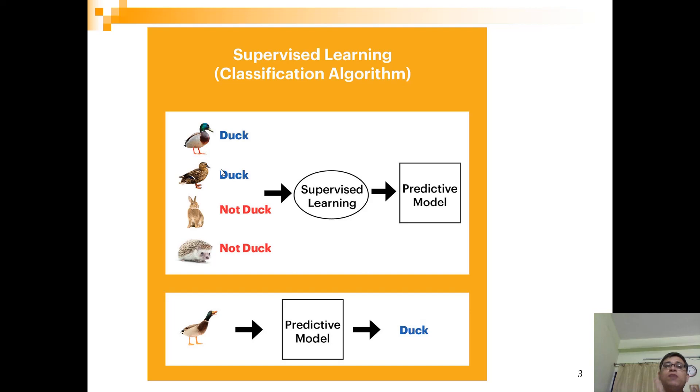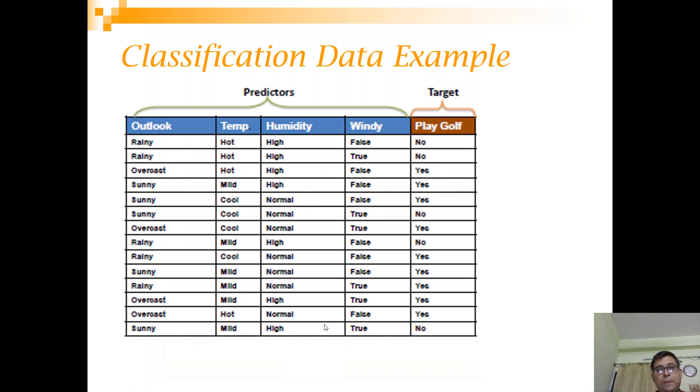One thing to be noted is that with each observation, it is labeled. So this labeling actually gives the term as supervised or supervision. Someone has already told you, some teacher or supervisor has already told you that this is a duck, this is not a duck, and like that. Once this predictive model is ready and you give an unlabeled instance to this predictive model, you get the label output as duck.